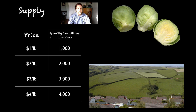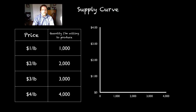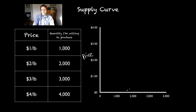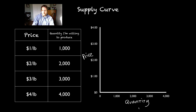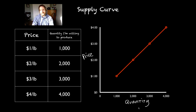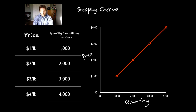We can take a look at this on a chart. On one side we have the price it's being sold at, and on the other side we have the quantity that people are willing to produce. At $1, I was willing to produce 1,000 pounds; at $2, 2,000 pounds, and so on. As the price goes up, so does the amount I'm willing to produce. This is what we call a supply curve.